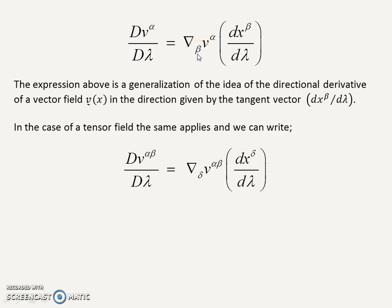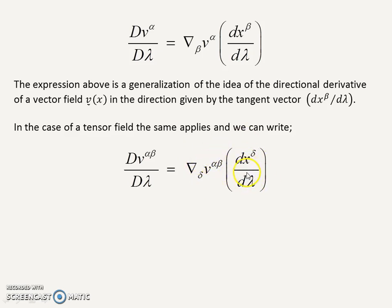It's really just like the directional derivative in vector calculus, where the dot product is used to find how a vector changes in the direction of another given vector. Here, we're asking: how does this vector change in the direction of the tangent vector? The same case applies to tensor fields as well. The absolute intrinsic derivative is how the tensor changes in the direction of the tangent vector along the curve — how does a tensor field defined along a curve change in the direction of the tangent to that curve?